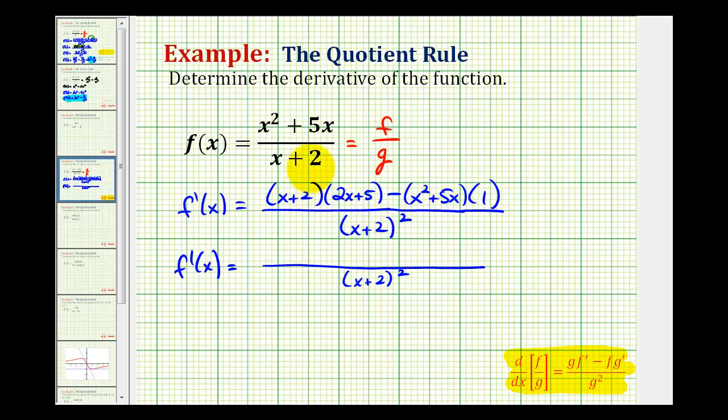When we multiply these two binomials we'll have four products, so we'll have two x squared plus five x plus four x plus ten.